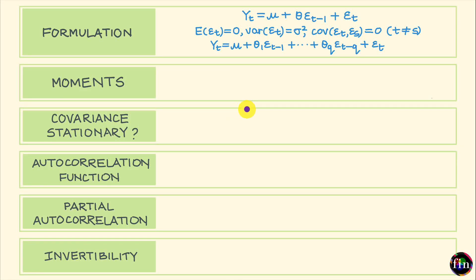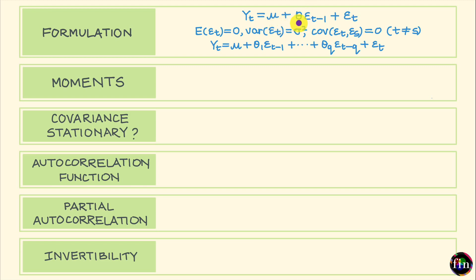In this video, we will take a look at a few key properties of moving average models. These are also called MA models. The simplest MA model is one which chooses to work with a single lagged value of the shock. This model is also called the MA1 model, and its specification goes something like this: the level of your time series, denoted by Y for this period T, is simply equal to a constant mu plus theta times the shock in the previous period, epsilon T minus 1, plus the shock in the current period, epsilon T.